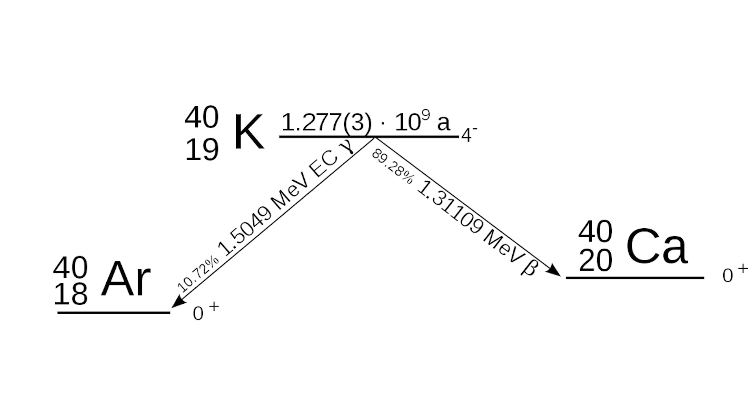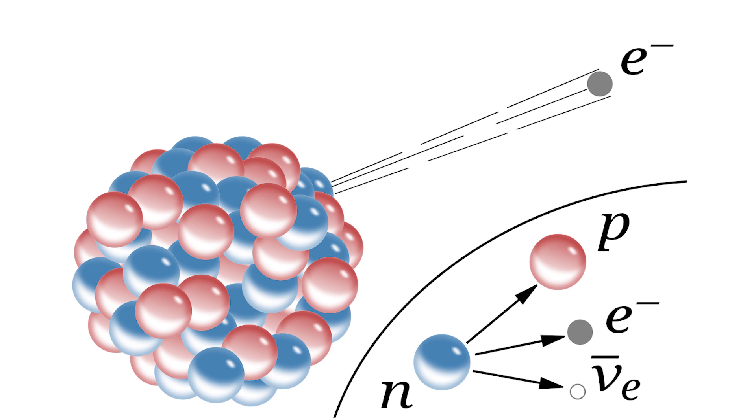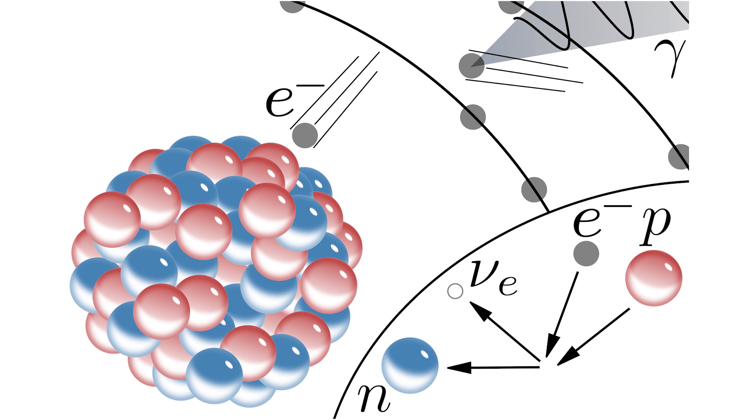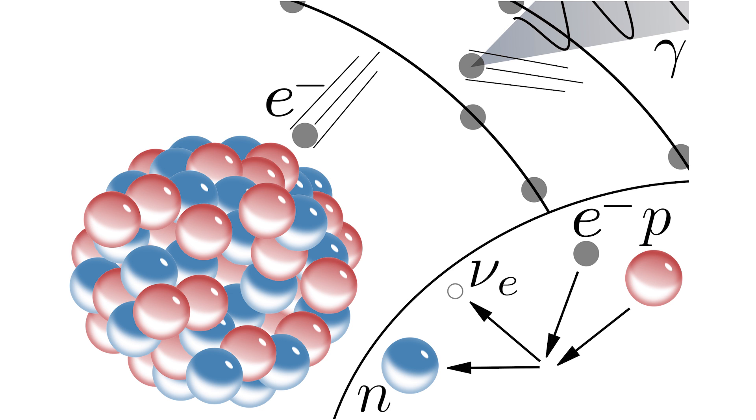That other 11% of the time when it decays into argon is when things get exciting. Rather than one of the neutrons ejecting an electron, in this case, one of the protons can absorb an electron, and goes the other way, turning into a neutron. But this leaves the core of the new argon atom with way too much energy, and it needs to get rid of it somehow. So it does this by emitting a very high energy form of light called a gamma ray. And it's that gamma ray where things get weird.